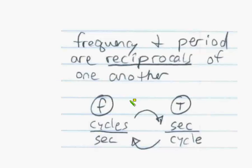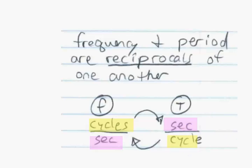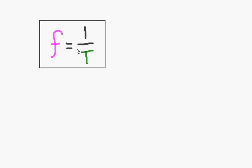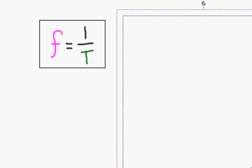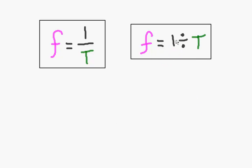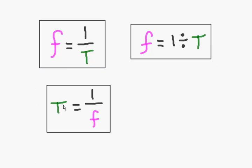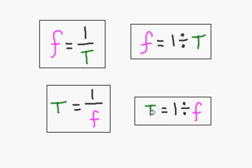So let's see how frequency and period relate. We can see that frequency and period are reciprocals of each other. If we just take the number of cycles per second and flip it, we get the number of seconds per cycle. That leads us to our equations from our notes: frequency equals one over the period, meaning you just take one divided by the period to get the frequency. Also, period is one over the frequency — if you want the period, you take one divided by the frequency. That's how you find the reciprocal.